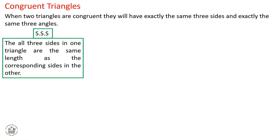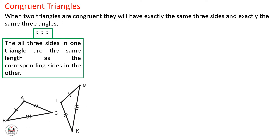Now let's learn the three different cases of congruency. First case: SSS, or Side-Side-Side. In this case, all three sides in one triangle are the same length as the corresponding sides in the other triangle. This is the easiest case of congruency. So in triangle ABC and triangle KLM, we have side AB equal to LM, BC equal to KM, and side AC equal to side LK. In this case, these two triangles are congruent by Side-Side-Side.